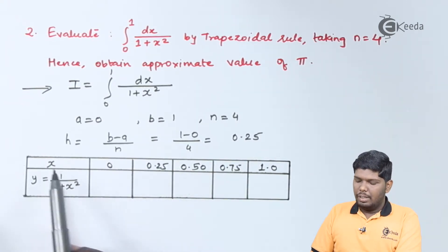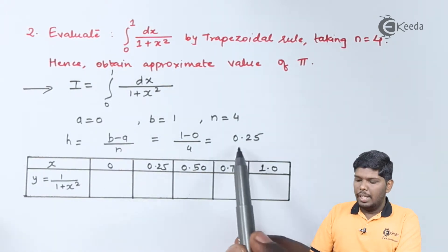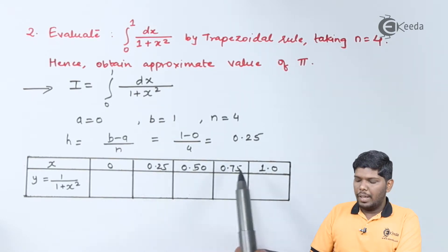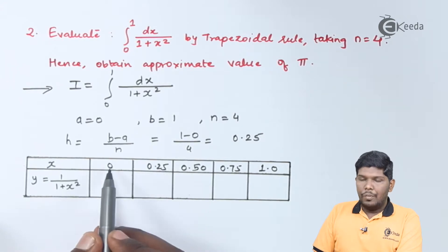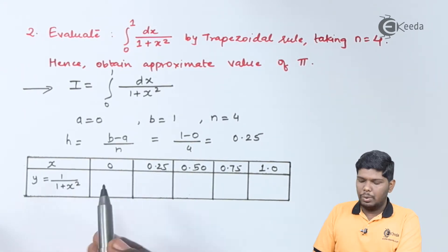In the table of x and y, we have the values of x: initial lower limit is 0, increased by 0.25, plus 0.25 will give you 0.5, followed by 0.75, and finally we have 1. Now, if I substitute x as 0 in the given function, we have 1 upon 1 plus 0. That will give you 1 only.